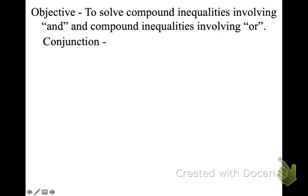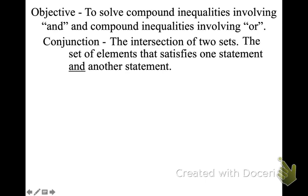Let's first talk about a conjunction. A conjunction is the intersection of two sets. The important words here are intersection and AND. Conjunctions are intersections, and they are ANDs — they are the commonalities.